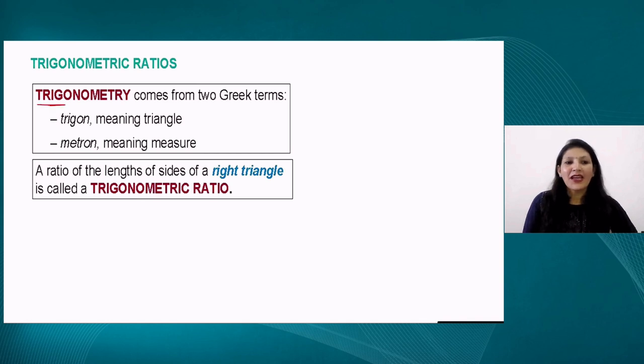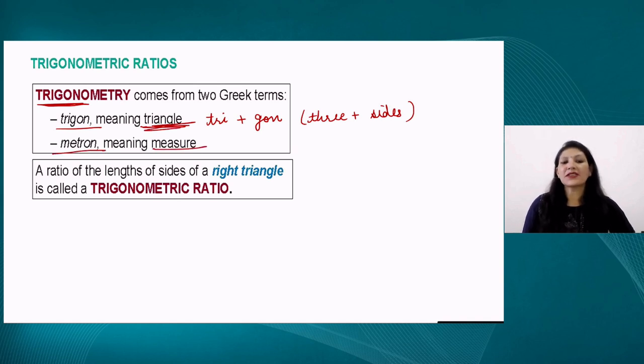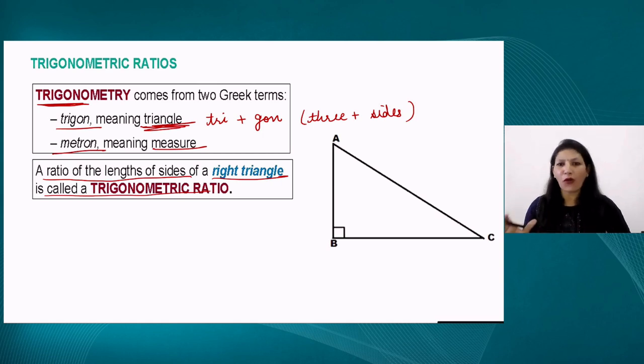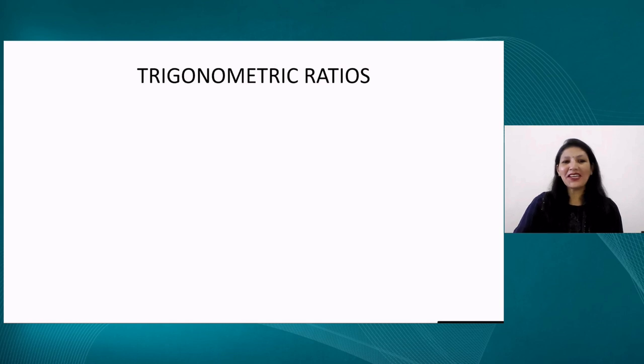So trigonometry - let's see what this means. Trigon means triangle. If we divide this into two parts, it's tri plus gon. Tri means three and gon means sides - that means a figure which is having three sides, known as triangle. And metron means measure. So from the three sides' measurement of a triangle, we will calculate some T ratios. That's why these are called trigonometric ratios. The ratio of the length of the sides of any right angle triangle is called a T ratio.